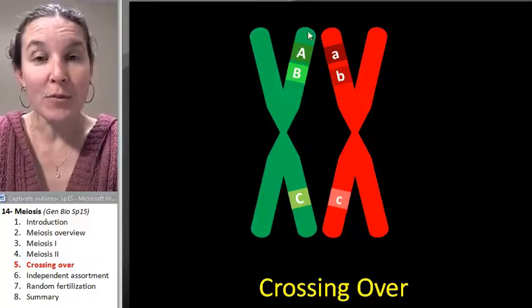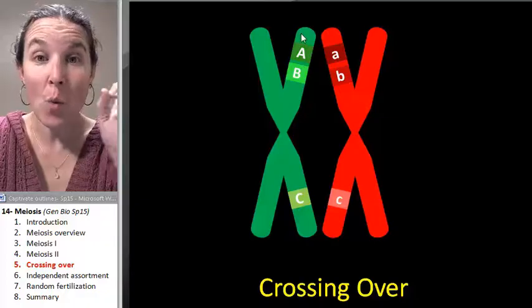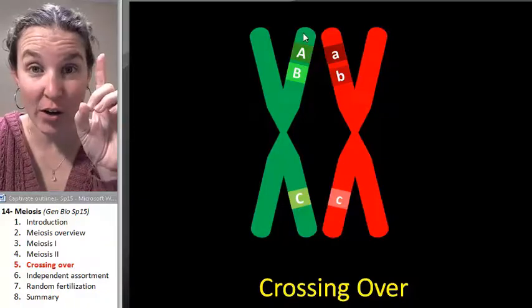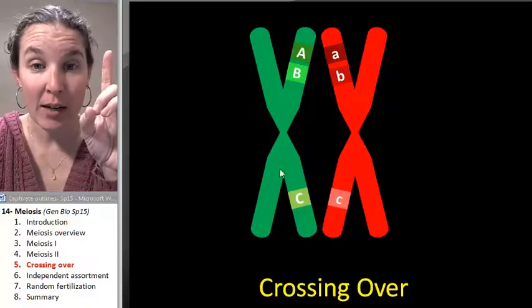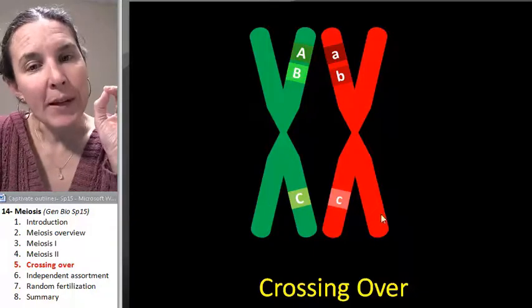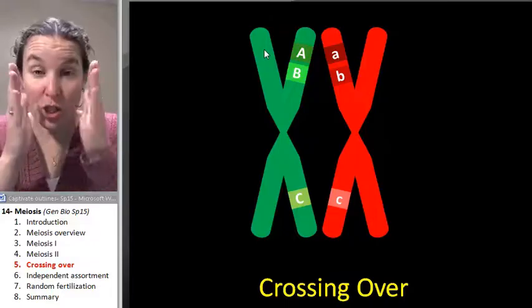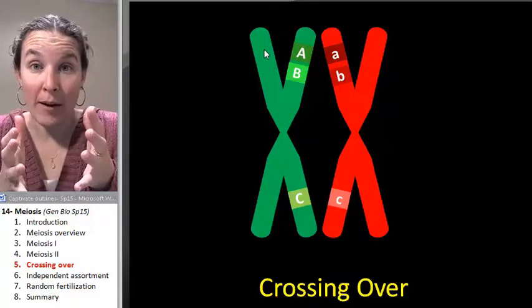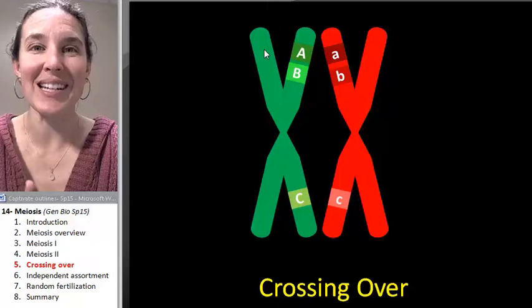First of all, do you agree that I have one homologous pair here? My green homologue and my red homologue. And do you agree that each pair, each individual homologue has a sister chromatid attached?